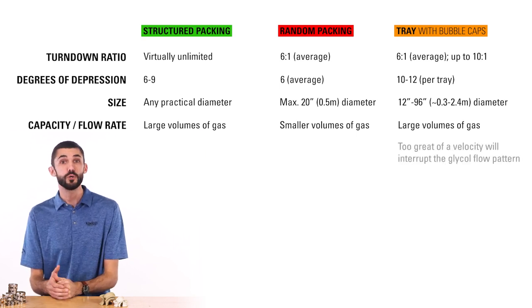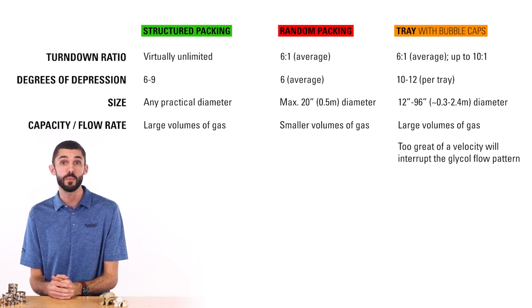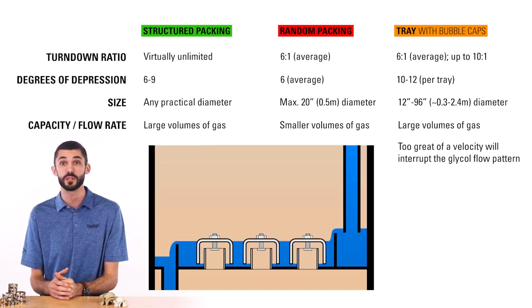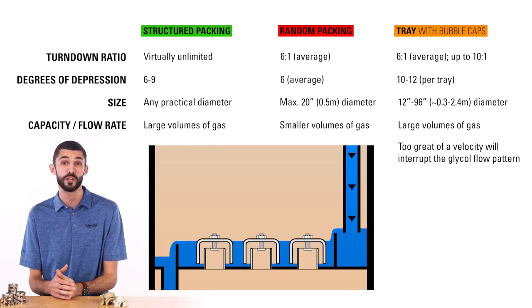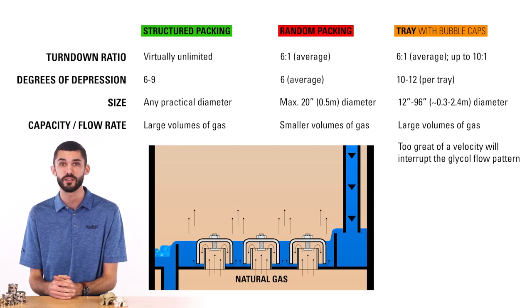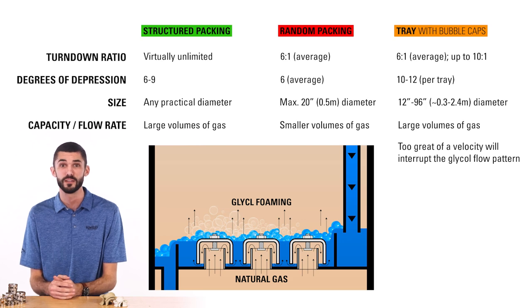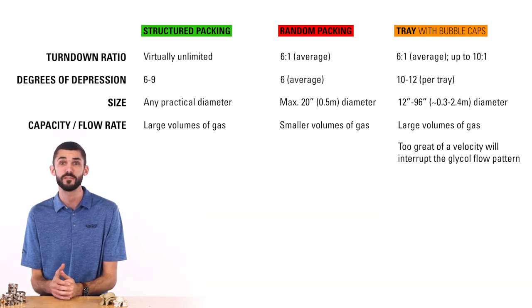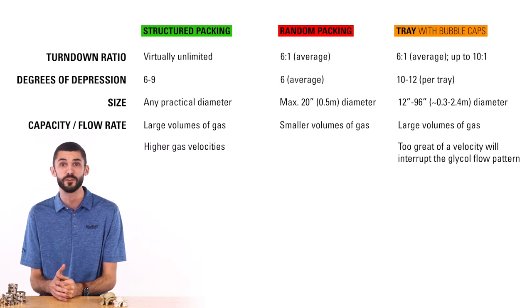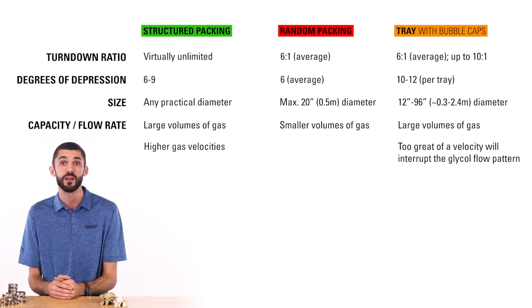In a tray tower, greater gas velocity will interrupt the glycol flow pattern and break the liquid seals at the points where the tray downcomers meet the trays. This results in glycol being swept out of the tower with the gas. Because of the design of the structured packing, gas velocities can be higher than in tray towers, because the glycol will not be swept out of the tower by high gas velocities.